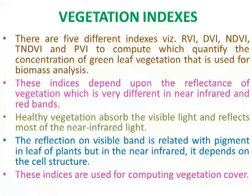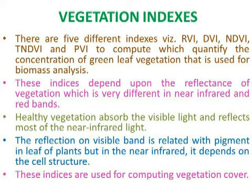Now we will discuss vegetation indexes. There are five different indexes: RVI, DVI, NDVI, TNDVI, and TVI, to compute which quantify the concentration of green leaf vegetation used for biomass analysis. These indices depend upon the reflectance of vegetation, which is very different in near-infrared and red bands. Healthy vegetation absorbs visible light and reflects most of the near-infrared light. The reflection in the visible band is related to pigment in the leaves, but in the near-infrared it depends on cell structure. These indices are used for computing vegetation cover.